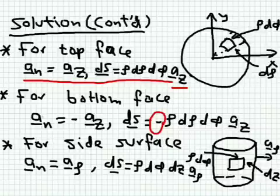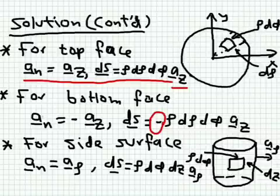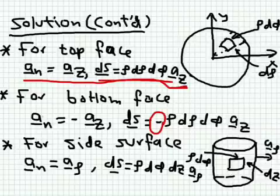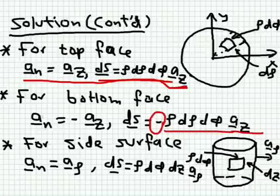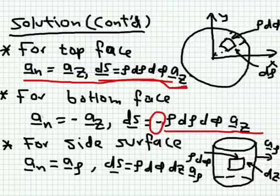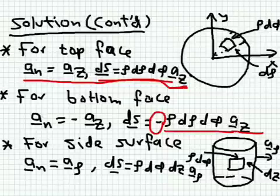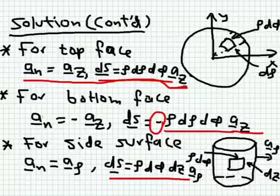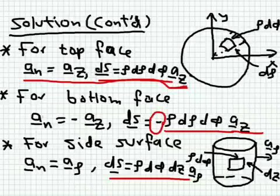This is important: when taking the dot product between F and the top area vector — which points in z — we keep only the F_z component. The same applies for the bottom area vector. For the side wall, the differential area vector has only a rho component, so when you dot F with that area vector you pick only the F_rho component of your vector.